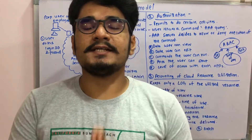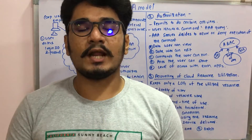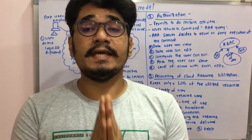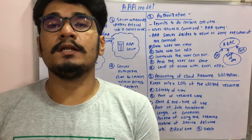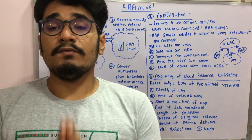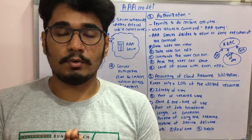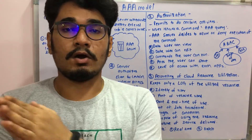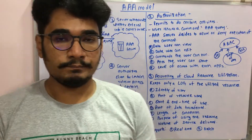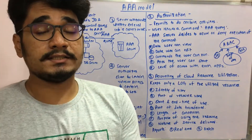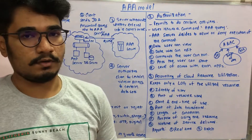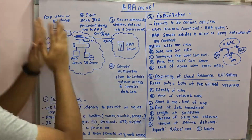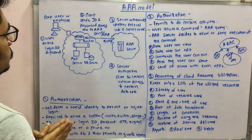Welcome back to another video on cloud computing. In today's video we will be seeing what is the AAA model in cloud computing. This is a very essential model which is used for many clouds like public cloud, private, or hybrid clouds. Let's understand what AAA stands for, beginning with a diagram.